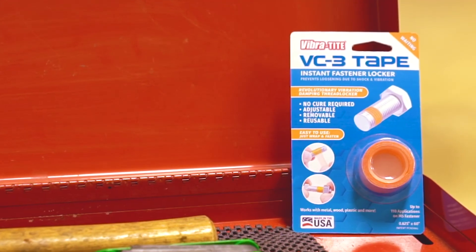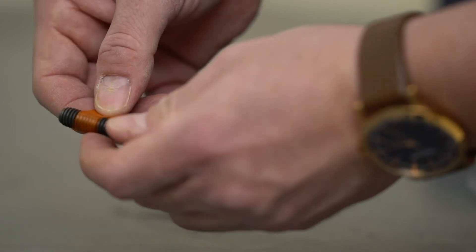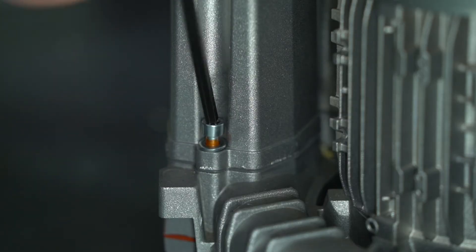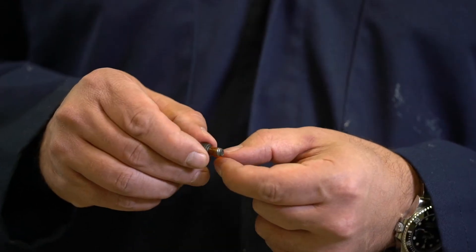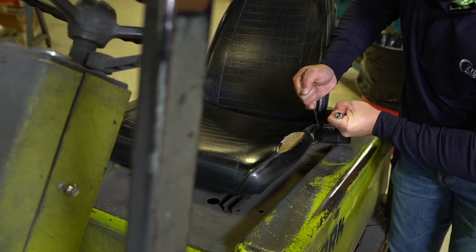VC3 is also available in a tape that works instantly. No cure means equipment is ready for immediate use, and if a post-assembly adjustment is needed, VC3 tape is completely adjustable and reusable up to three times.